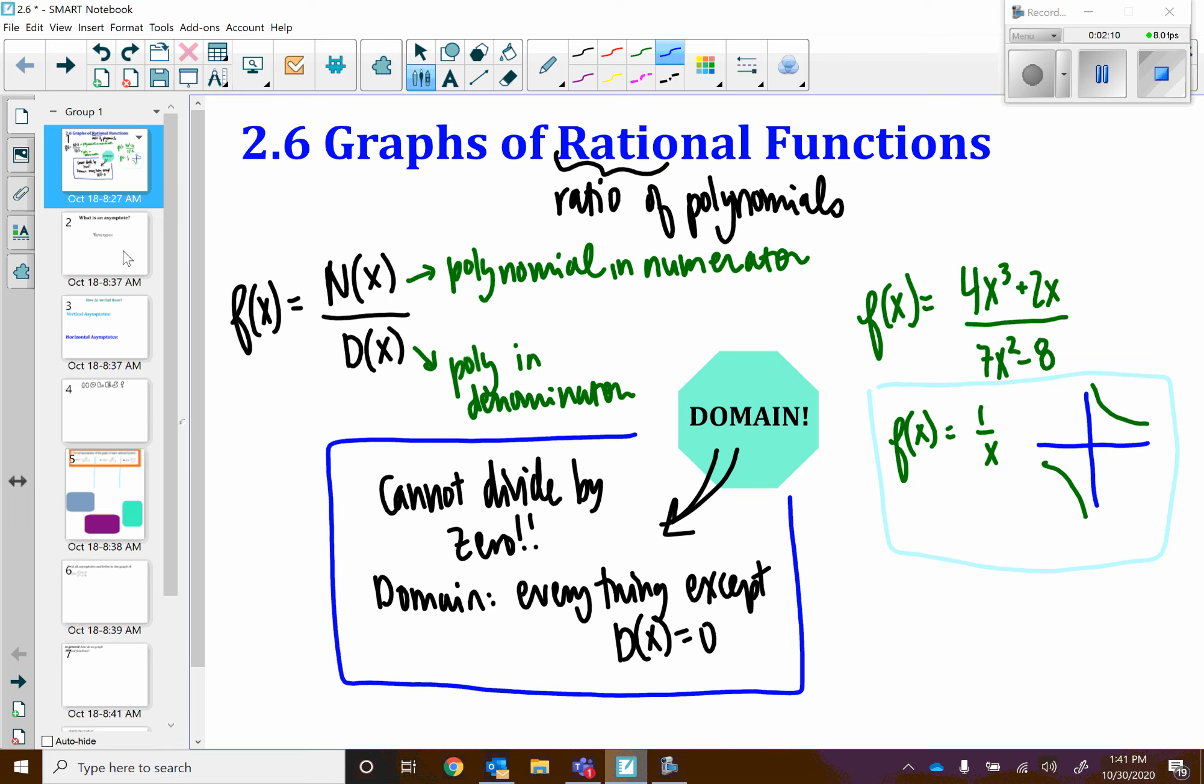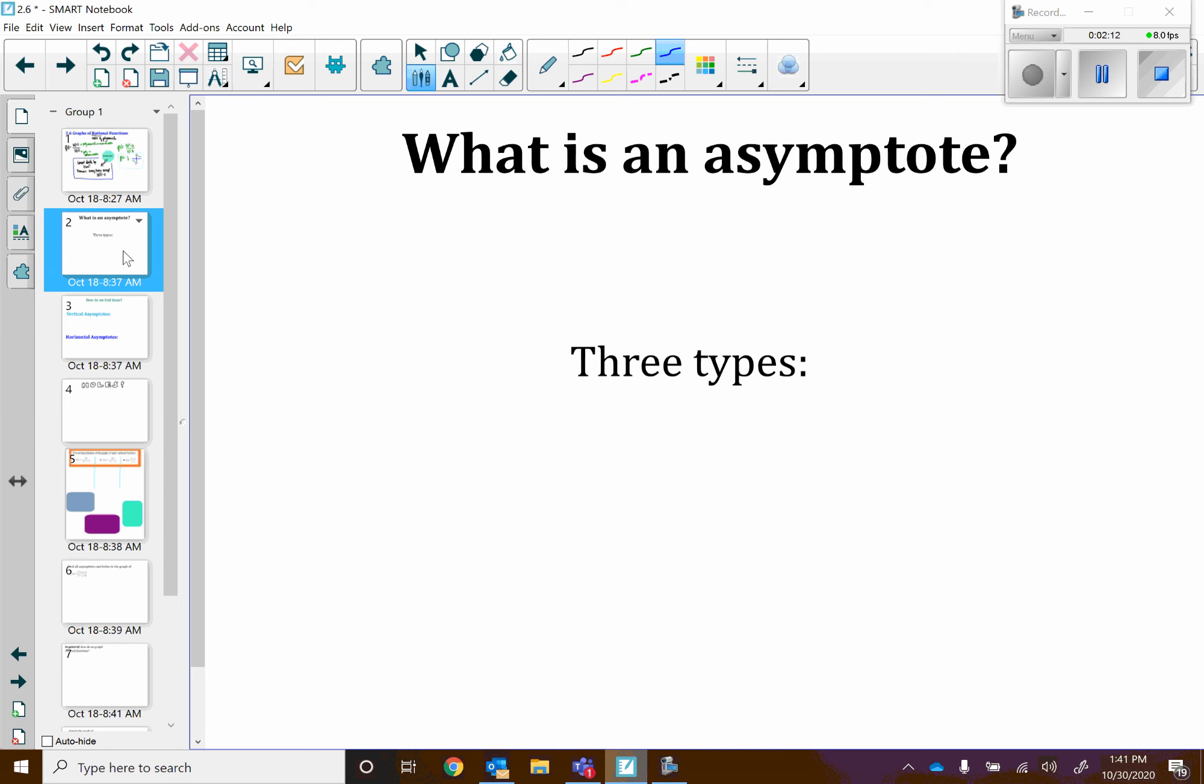So there's a couple other characteristics of rational functions I want to talk about. And I'm first going to talk about an asymptote, which is kind of like a line. I'm going to put it in quotes because it's not technically a line that a function approaches. And I'm actually going to put an asterisk here because I do kind of want to talk about that in a moment.